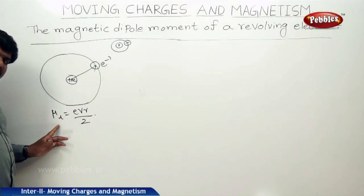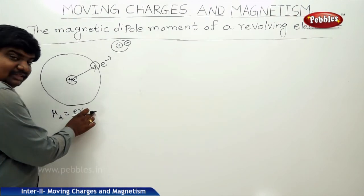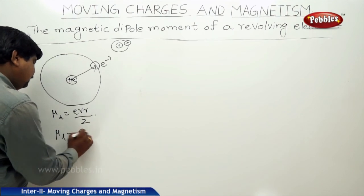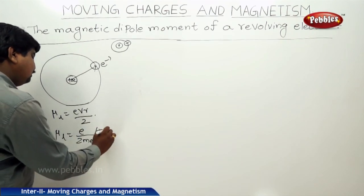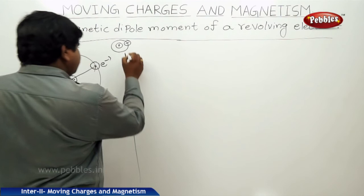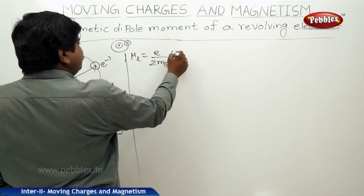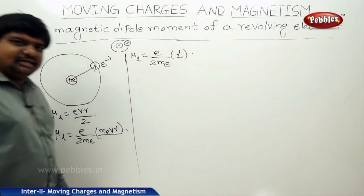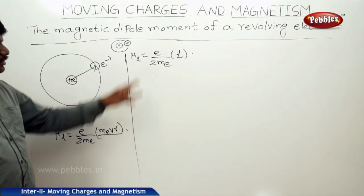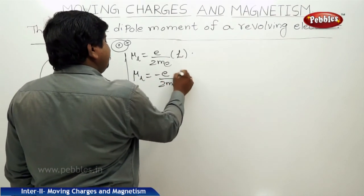We got magnetic momentum mu_L equal to E·v·R divided by 2. Multiplying and dividing by mass of electron Me, therefore mu_L is equal to (E / 2Me) times Me·v·R. Here Me·v·R is the angular momentum L. Since the angular momentum is anti-clockwise, we write mu_L equal to minus E divided by 2Me, times L.